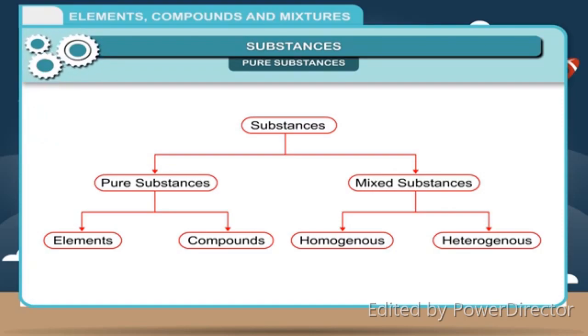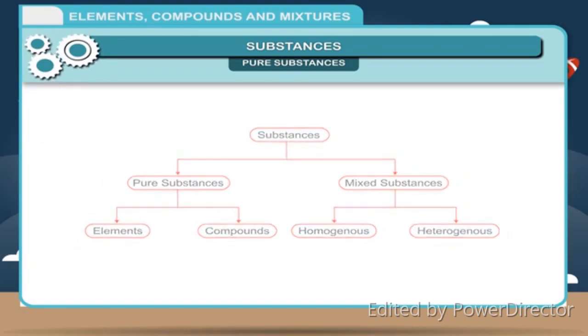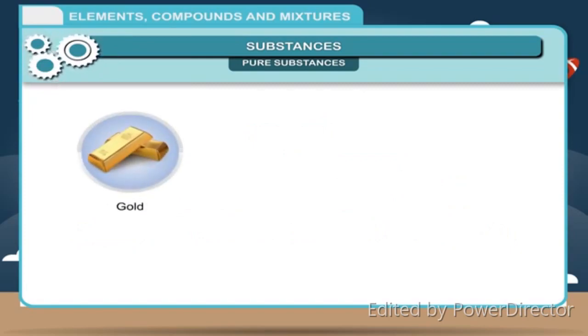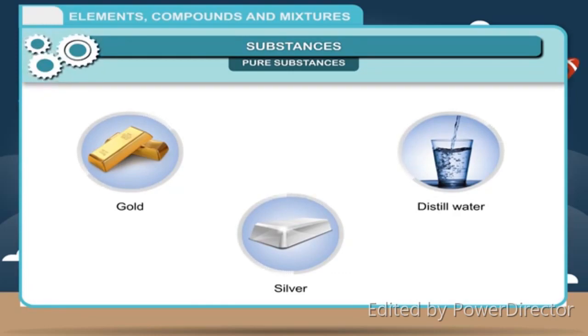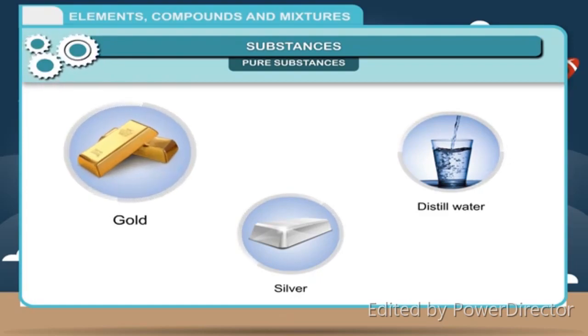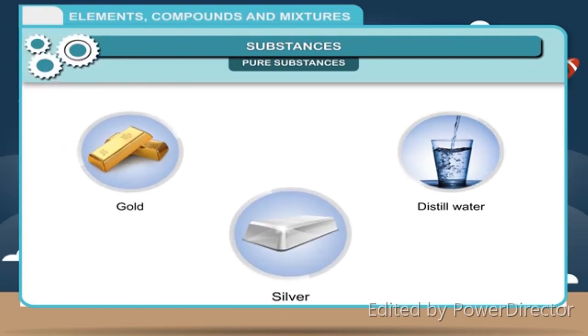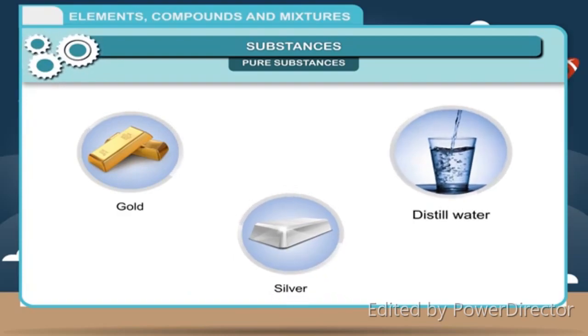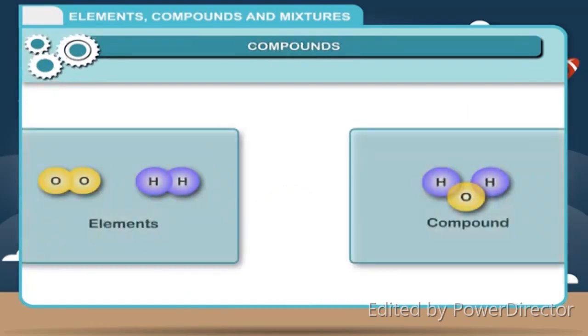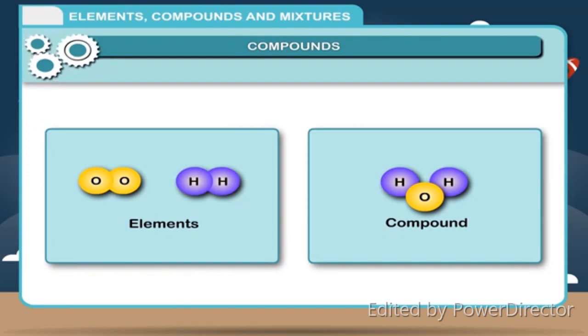First, pure substances. Pure substances are single substances. It is defined as the substance which contains particles of the same kind with same properties. Examples: gold, silver, and distilled water. A pure substance is either an element or a compound.